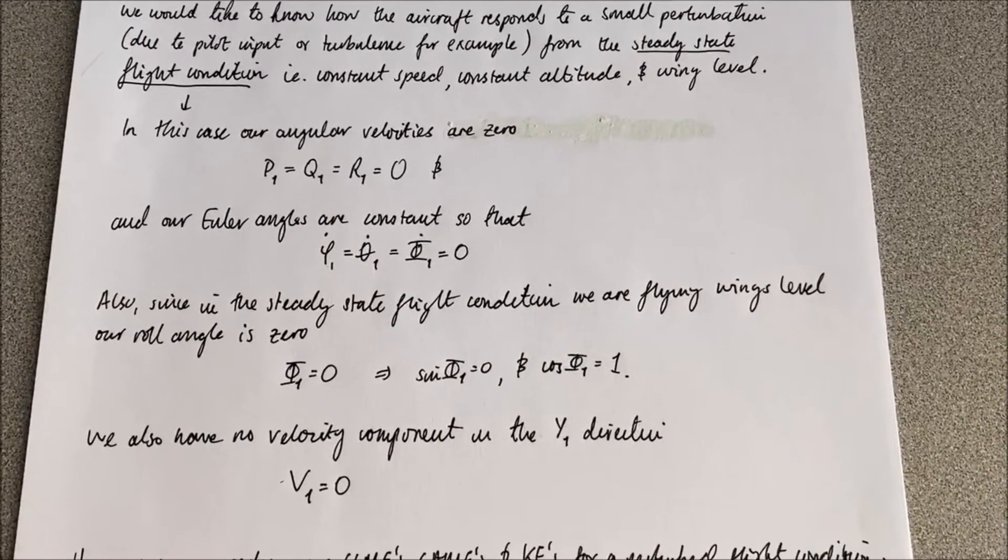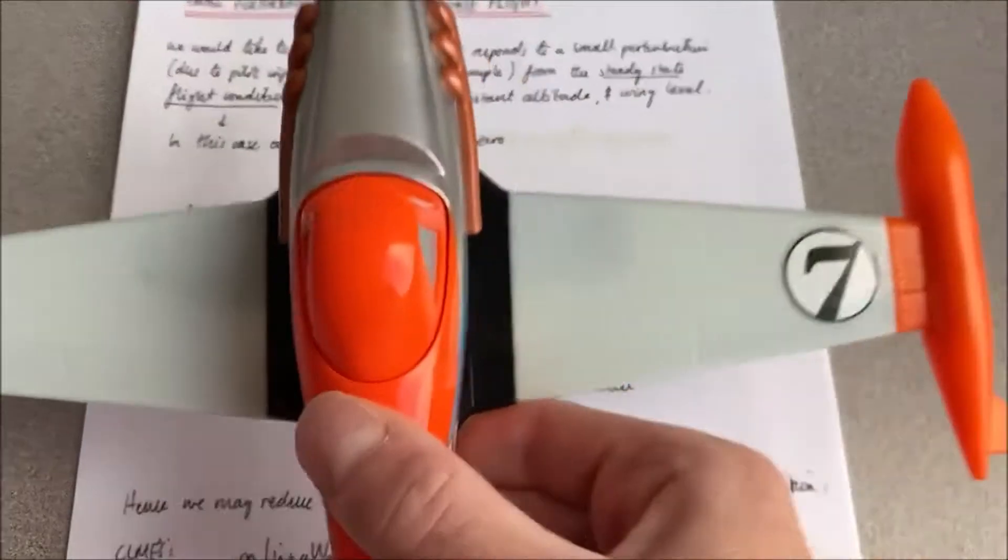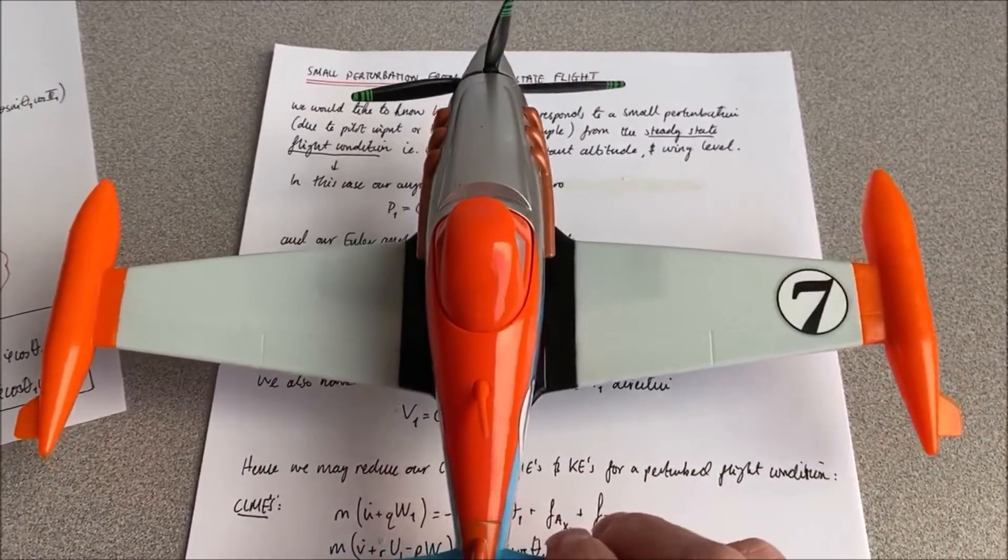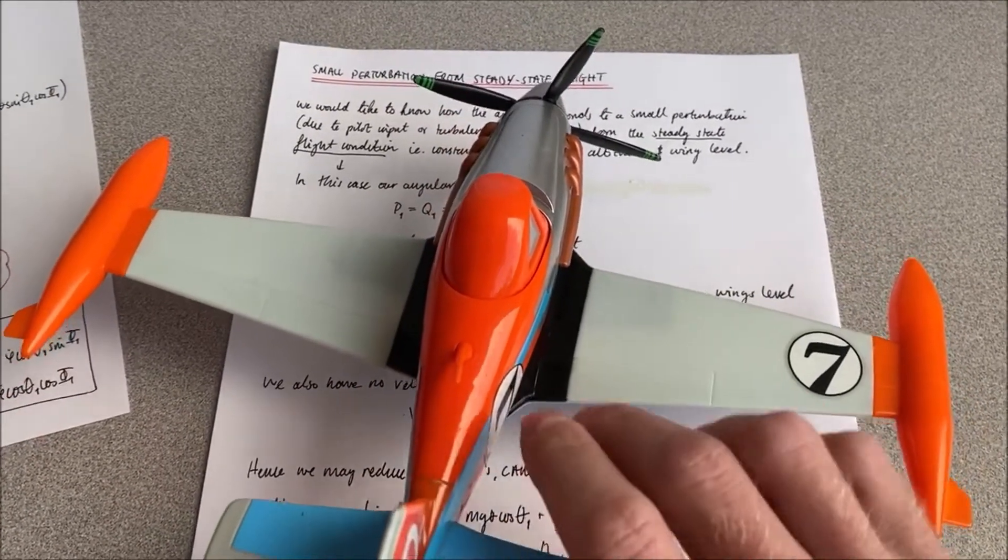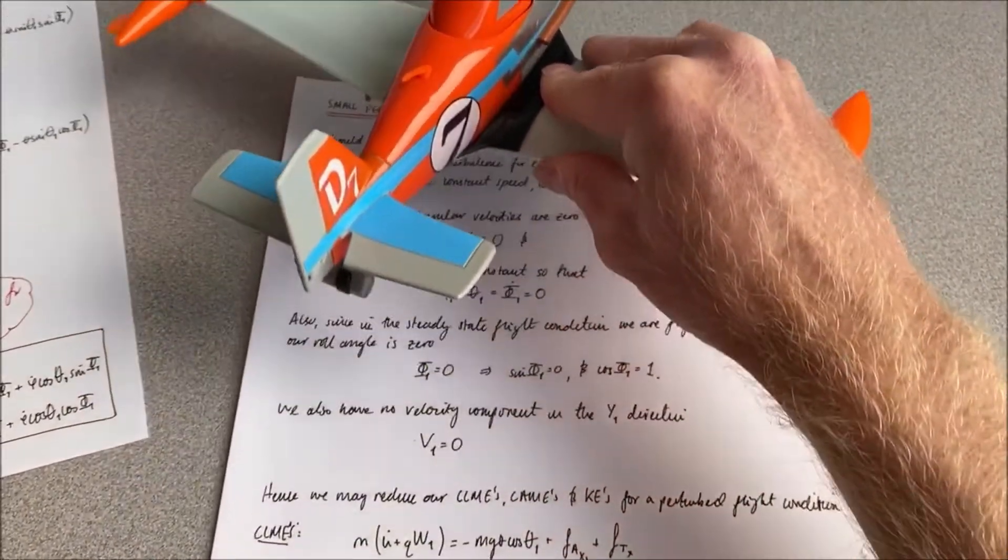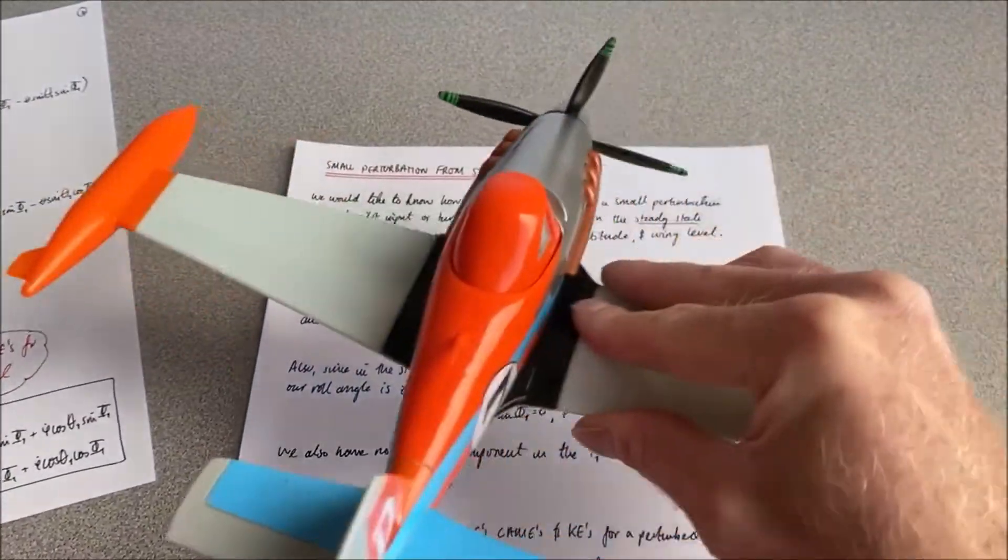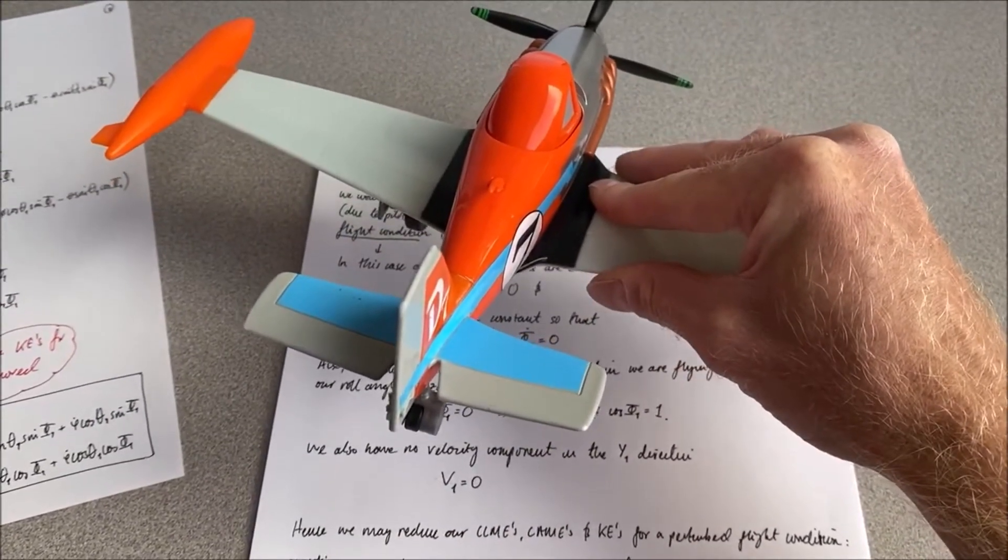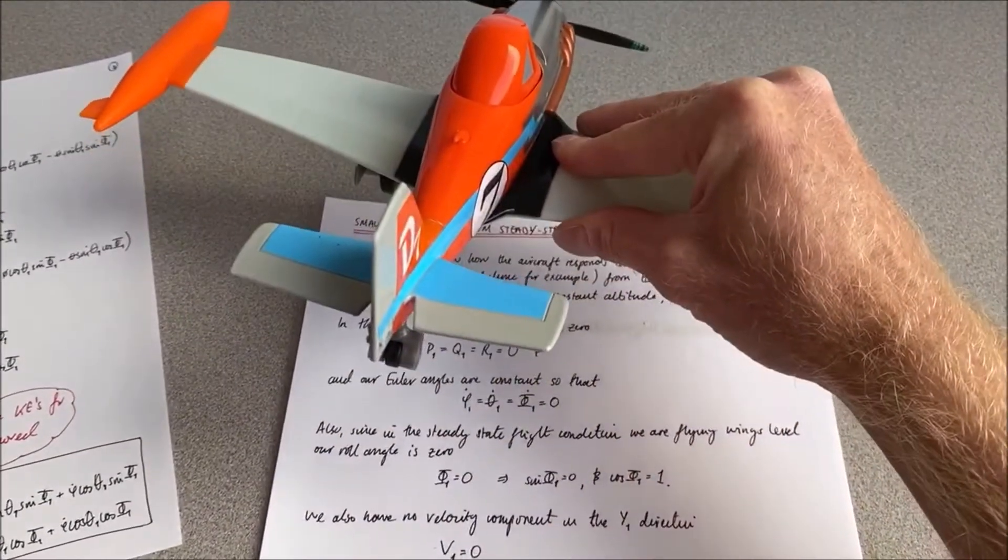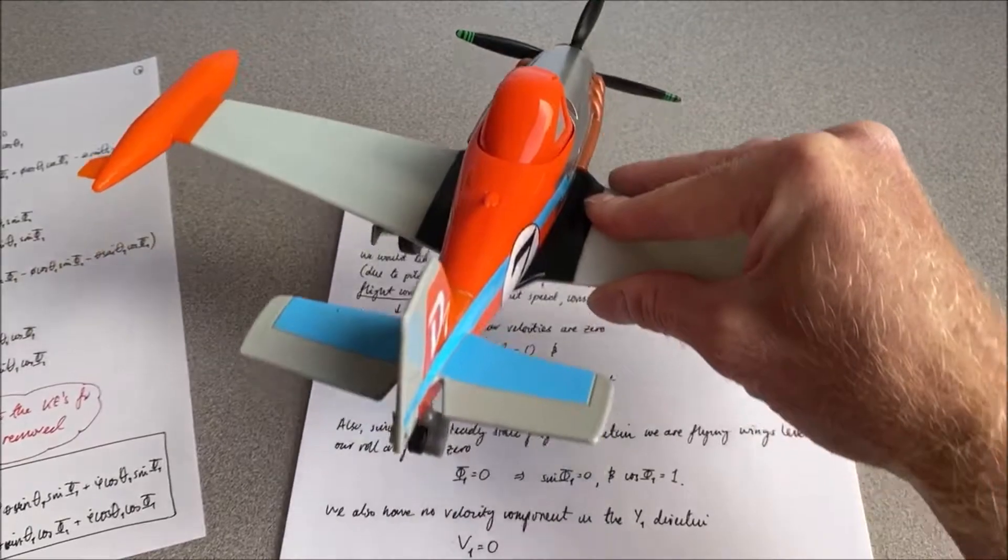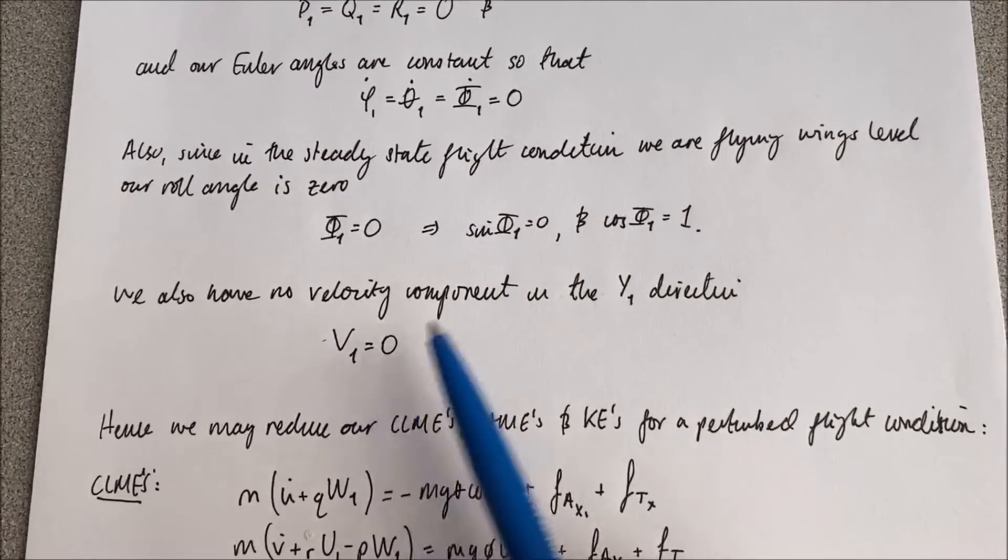We also have no velocity component in the y direction. So say here's Dusty - say we're flying along and we have some kind of yaw angle giving us a side slip. We're still in this direction of flight, we're still following the x_1 axis. So we have no y component of velocity. We might be ascending or descending, and obviously we have a forward component of velocity, but because we've yawed the aircraft to give us a side slip and we're still following the x_1 axis, we have no y component of velocity.